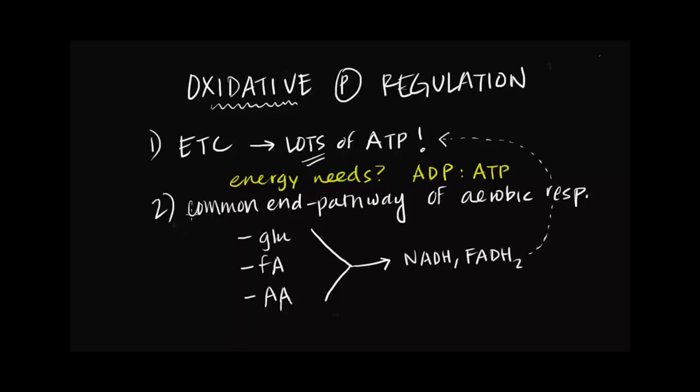But first, I want to touch on this second point here, which is that it's a common end pathway for aerobic respiration. And I really make this point because it reminds me why there is no major hormonal or allosteric regulation in oxidative phosphorylation. Remember, allosteric means that there's some type of enzymatic control that's being altered. But there is no major hormonal or allosteric regulation in oxidative phosphorylation. And the way I've always justified that to myself is that these forms of regulation allow us to really fine-tune regulation and to make sure that when we turn something on, we are turning it on with full certainty.